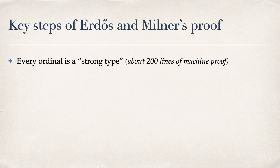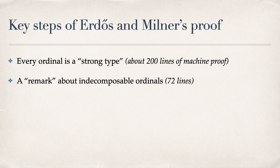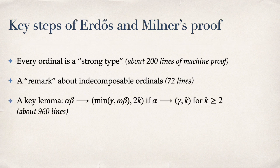The Erdős-Milner paper is five pages long. One of the claims was that every ordinal is a strong type — they define a notion of 'strong type' which goes beyond ordinals — and this was not proved in the paper because it was trivial to them. I had to prove it myself. The main lemma is the part that was wrong in the first version and was corrected in a subsequent paper.